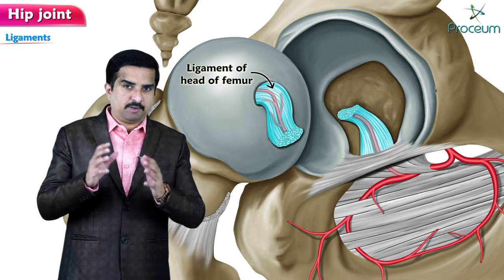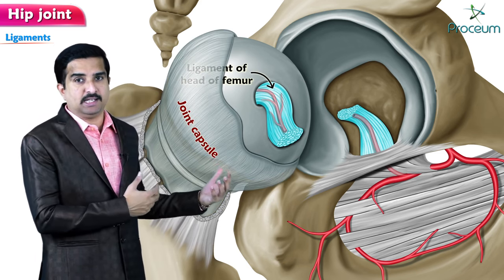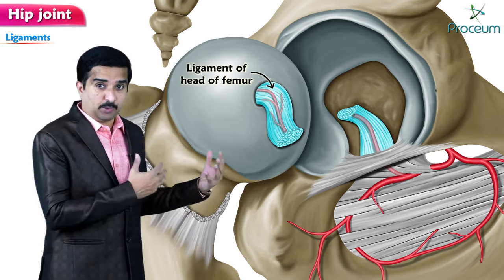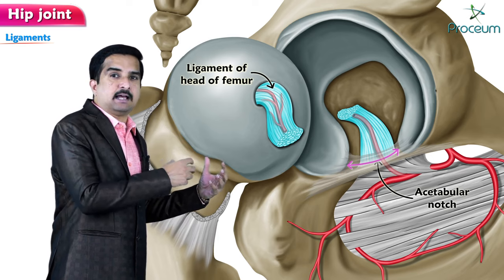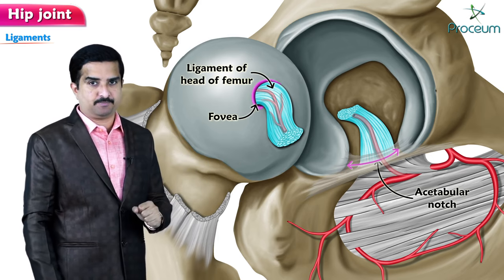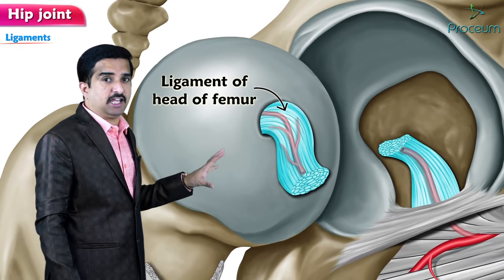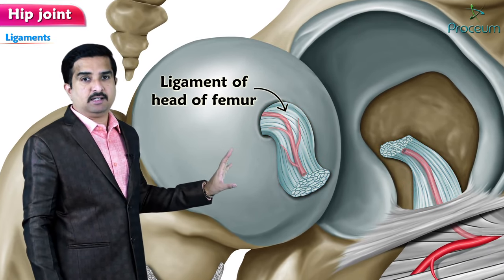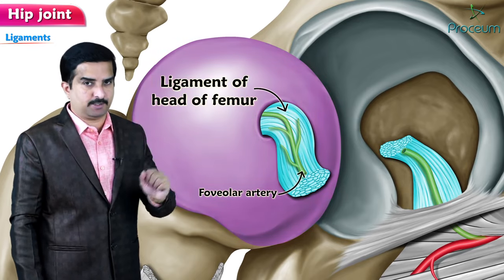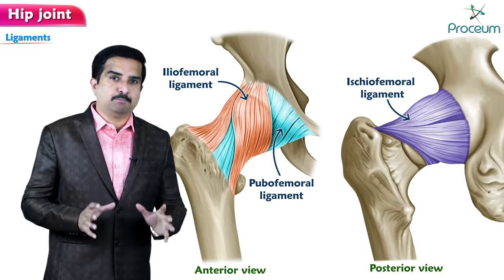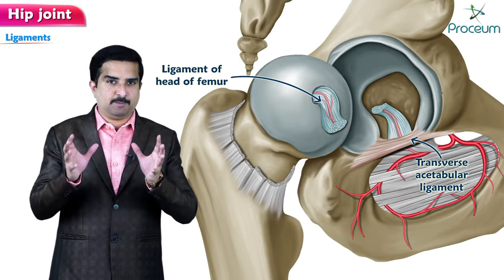Another important inner ligament is the ligament of the head of the femur. It is situated within the capsule but is extrasynovial in nature. It arises mainly from the acetabular notch and inserts upon the fovea of the femur. Within the ligament it provides a pathway for the foveolar artery to the head of the femur.